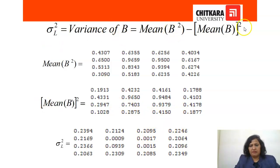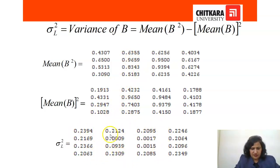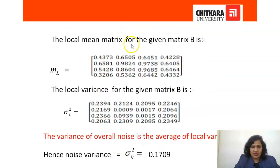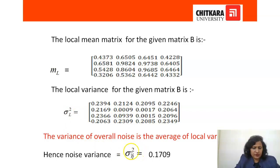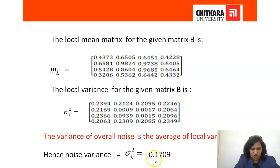Next, to get the local variance, just subtract these two — that is mean of B squared minus the square of the local mean. This gives us the local variance matrix for the entire matrix. The next step is to find the global variance. The global variance can be found by taking the mean of all these local variance values — add all 16 terms and divide by 16. The overall noise variance comes out to be 0.1709.